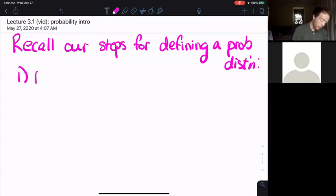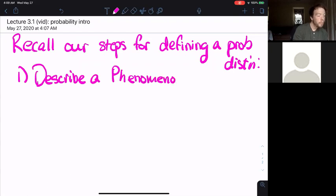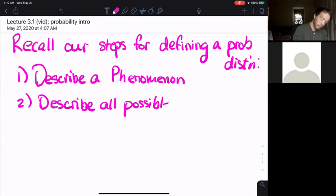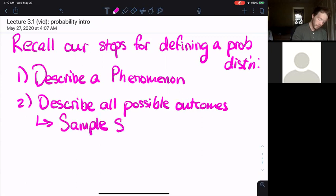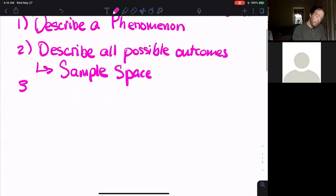They were: one, describe a phenomenon; two, describe all possible outcomes, which we call our sample space; and three, assign a probability to every possible outcome.